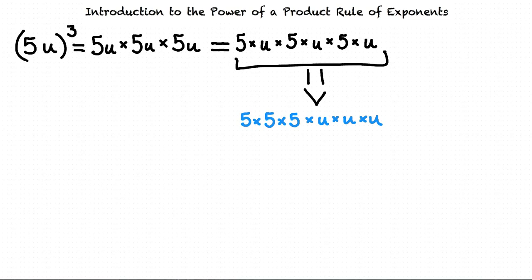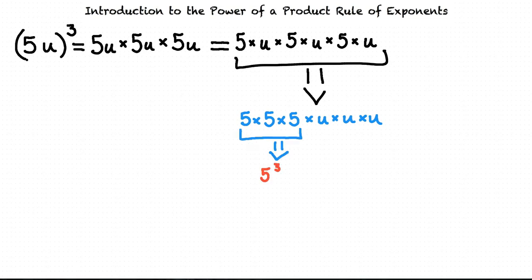So 3 5s multiplied together can be written as 5 to the power of 3. And 3 u's multiplied together can be rewritten as u to the power of 3. So 5 times 5 times 5 times u times u times u equals 5 to the power of 3 times u to the power of 3.